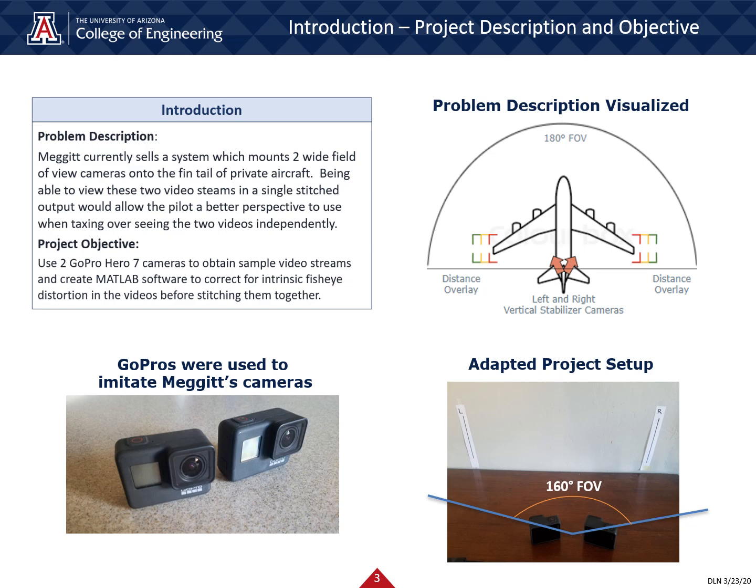We would also correct for fisheye distortions to the cameras and project a distance overlay over each of the plane's wings. Unfortunately, our team was not able to use actual video from Megit's own system, meaning that we were not able to use footage from a plane or from correctly oriented cameras. Our team then altered its project plan to use two GoPro cameras to obtain video streams and then create MATLAB software which would correct for fisheye distortion and stitch two videos together. While not written to the unique perspective of the cameras in Megit's system, this software would still be beneficial to Megit as it provides a baseline code from which they can build upon.